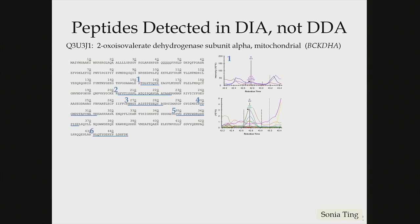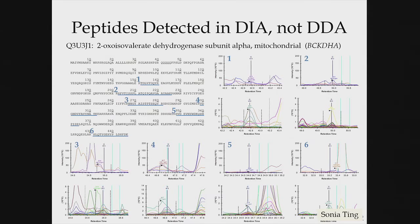Some peptides are visible in DIA but not DDA. Looking at MS2 data over time for a protein, we can see a signal for the peptide — messy but present. The reason we didn't detect it in DDA is because looking at the precursor, there's basically no signal in the MS1. There's no precursor to trigger MS2 in DDA. But we can still see it in MS2, which shouldn't be a surprise: MS2-based quantification is more selective in a complex mixture, making it more sensitive than MS1. These patterns hold for multiple peptides in the protein — good MS2 signal, weak MS1 signal.